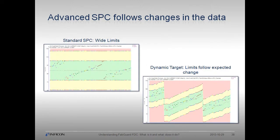FabGuard implements and extends traditional SPC to include dynamic target. In this example, standard SPC limits are insufficient to determine fault in data that is linearly related. Some variables are expected to change within a PM cycle, and FabGuard can use dynamic target to shape the SPC limits to the data and provide tighter control.